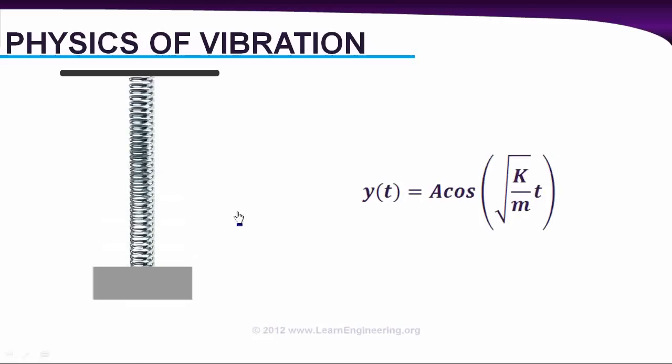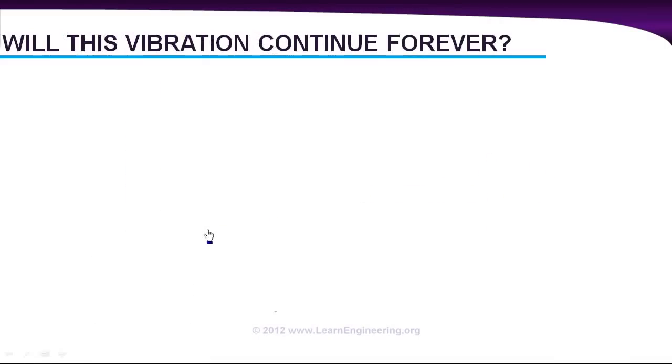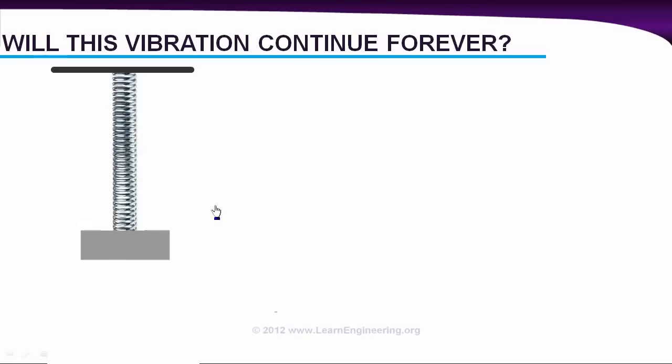But the next big question: will this vibration continue forever like this? Not exactly. What you see physically is something like this. It will start oscillating, and after some time the amplitude will decrease, decrease again, and finally die out. But in the previous case, we found the amplitude never decreases. That happened because we neglected something very important: the friction of air surrounding the mass. This is known as viscous force, and it can cause continuous energy loss to the system. So energy is not exactly conserved in the system; it keeps decreasing. As energy decreases, the amplitude of oscillation comes down.